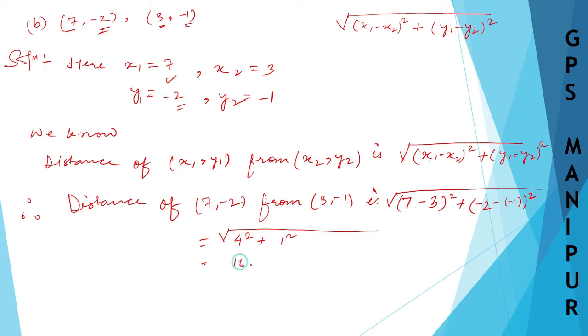4 square is 16 plus 1, it is 17. So it is root 17.